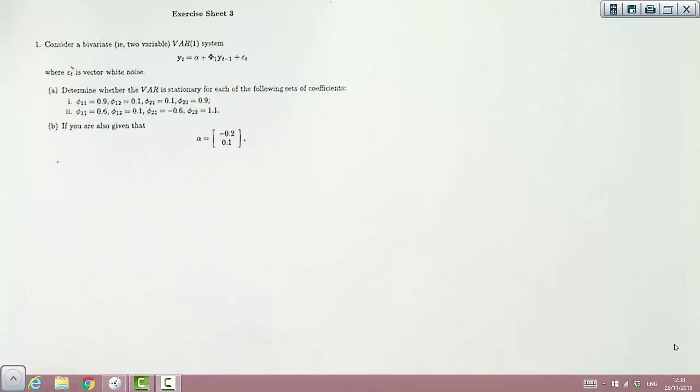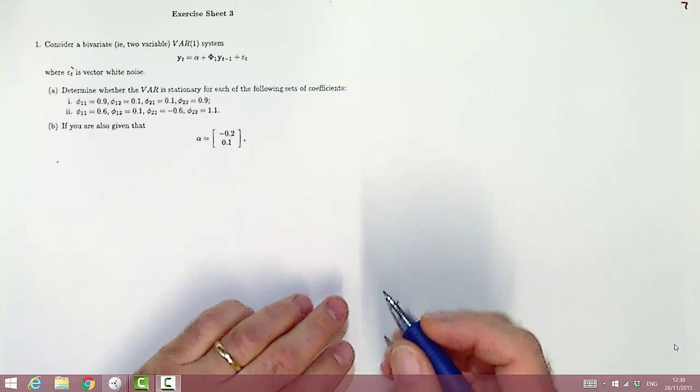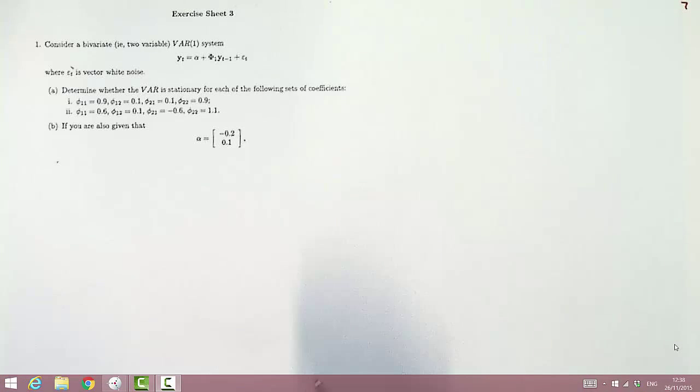In this question, we're told the data generation process is a VAR of order 1, and we're asked to assess whether it's stationary for a couple of the values of the auto-regressive matrix phi1.